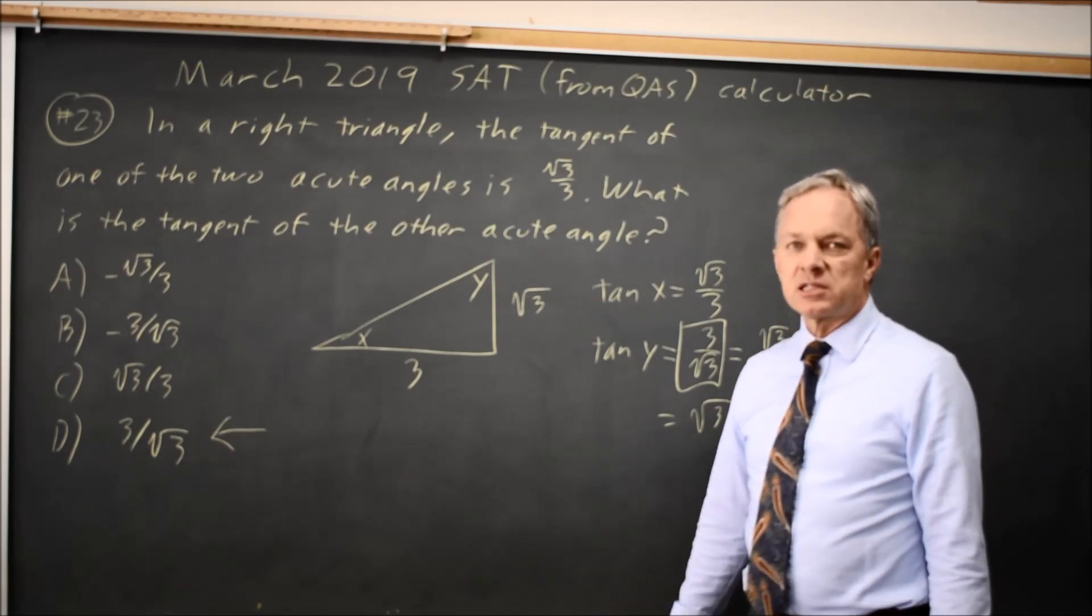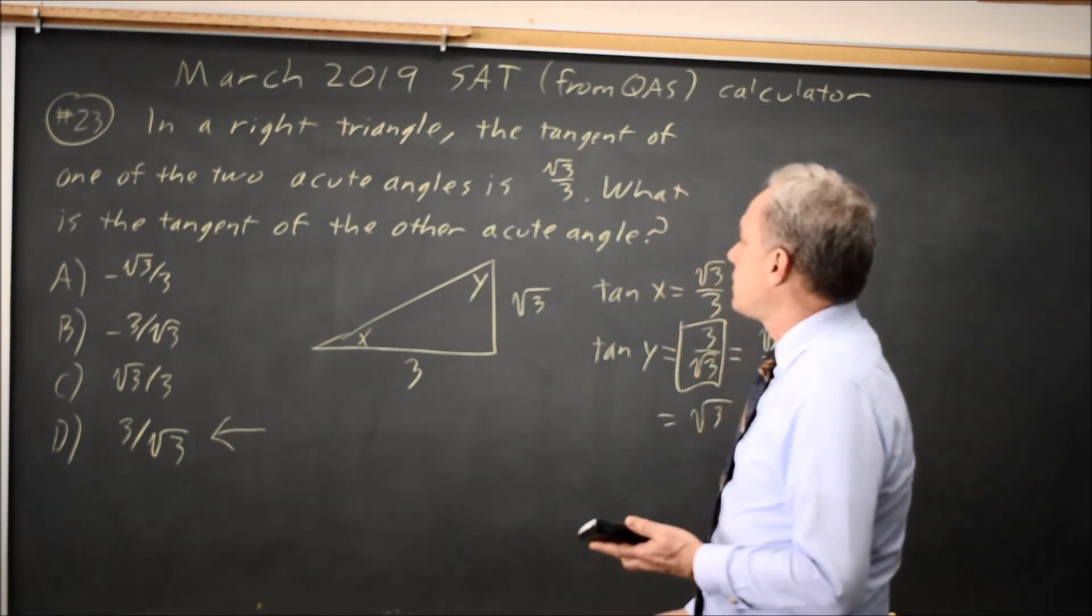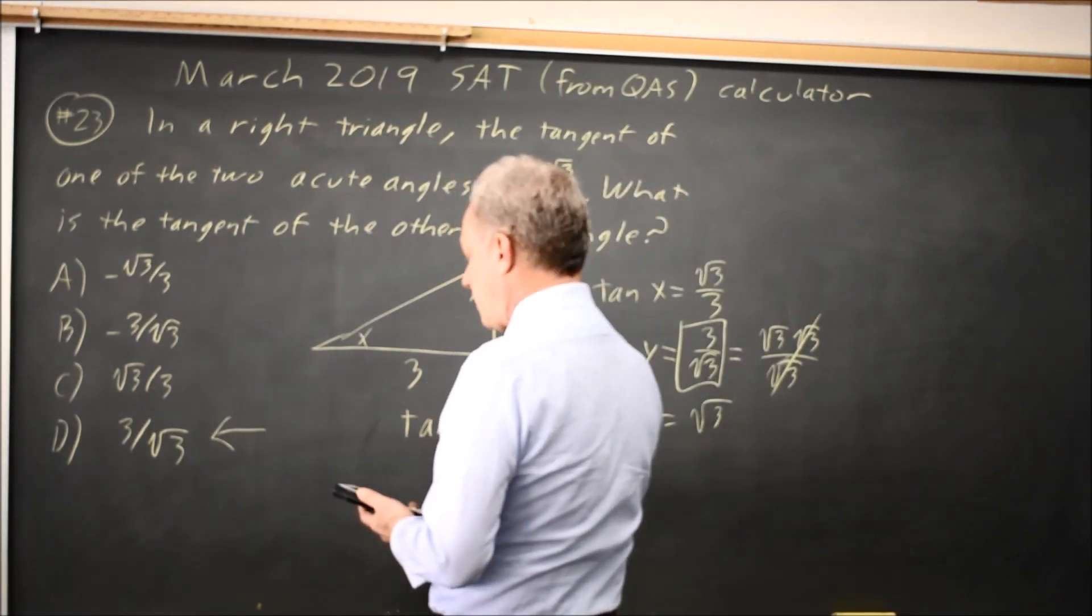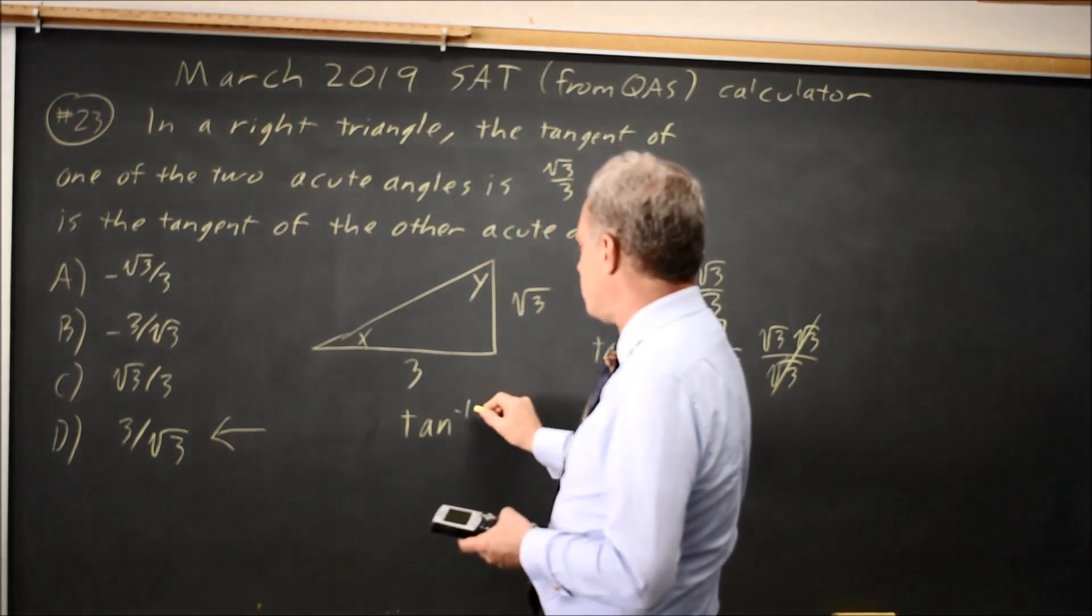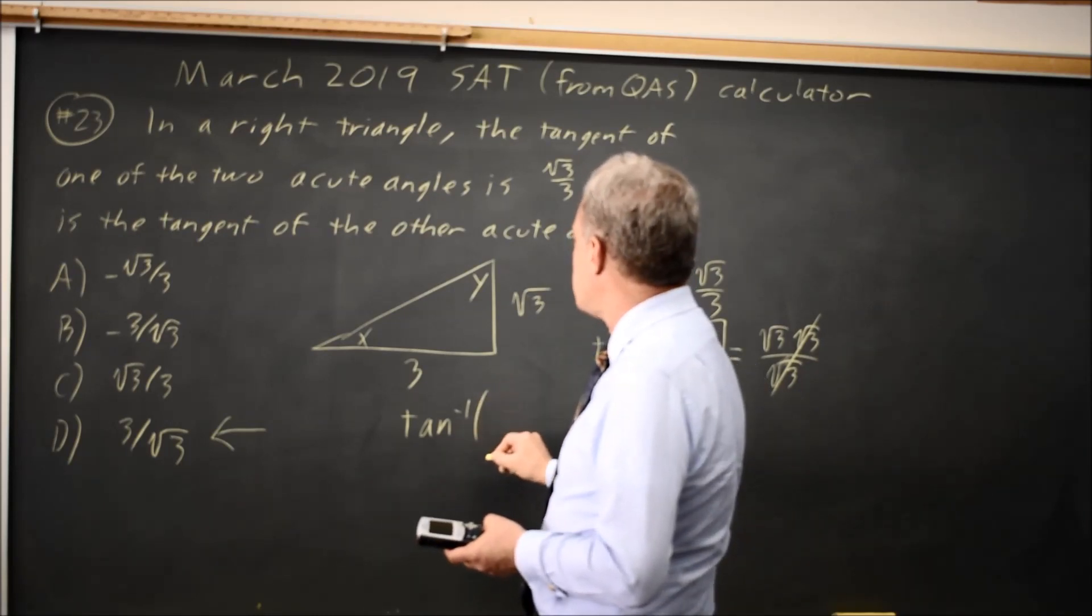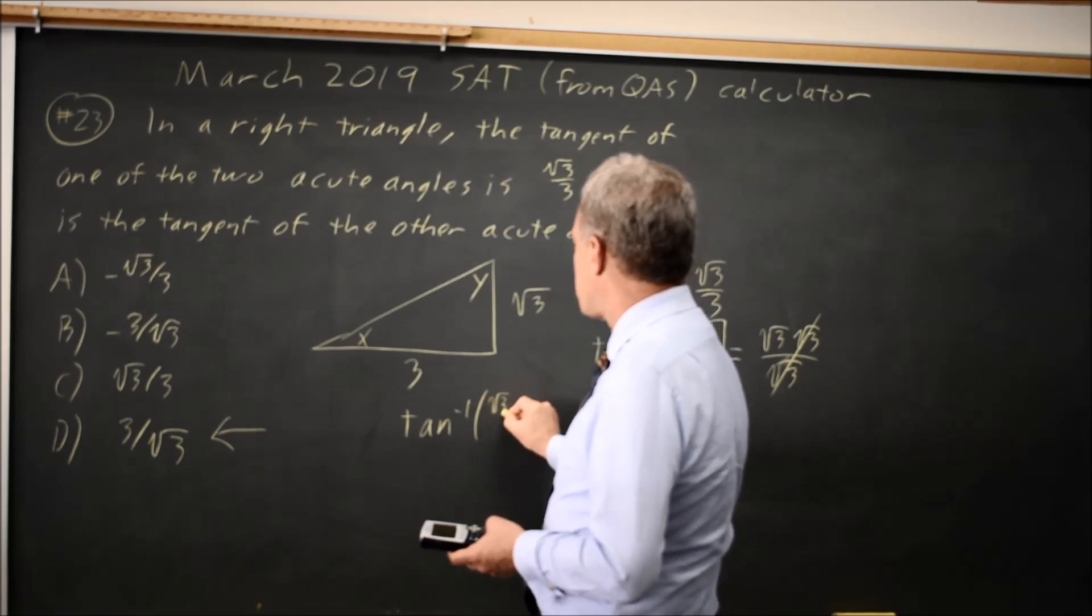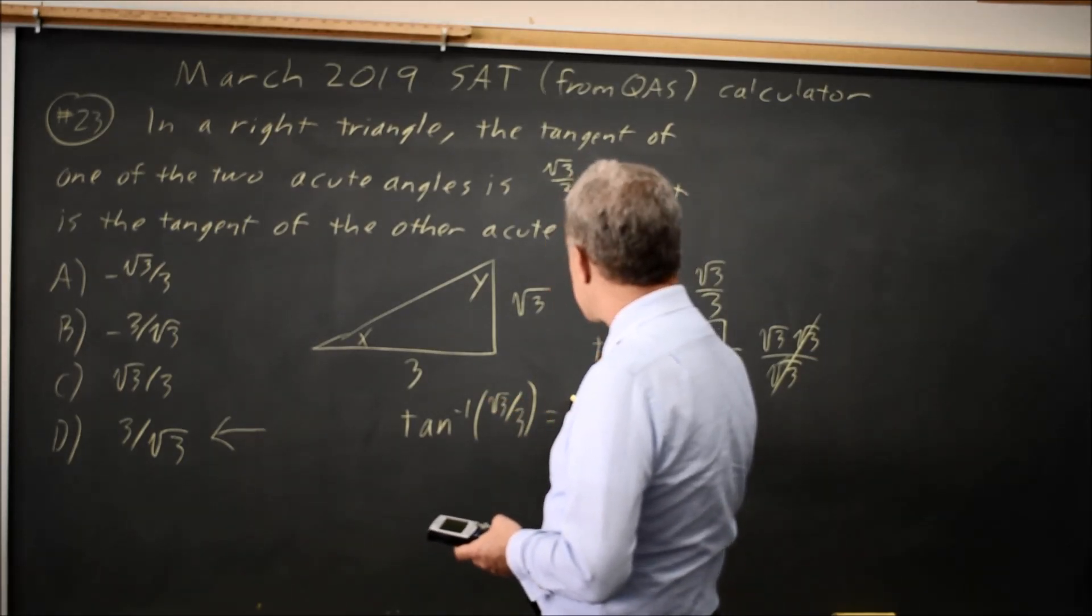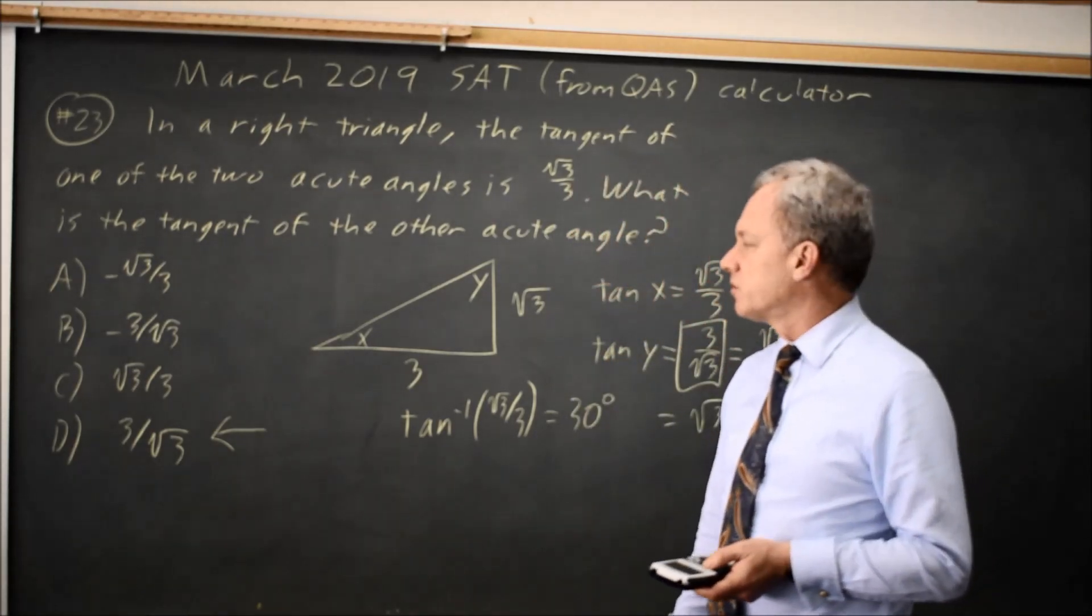Alternatively, since this is a calculator question, I could have asked the calculator, what is the angle that has this value for its tangent? And on my calculator, that's second, and then the tangent button for tangent inverse, which is not 1 over the tangent. That would be cotangent. It's the arctangent or inverse tangent of root 3 over 3. And the calculator says that is 30 degrees. The angle that has this value for its tangent is 30 degrees.